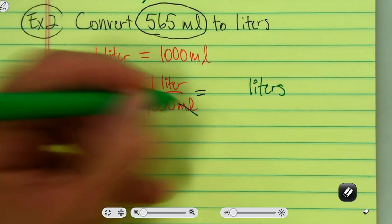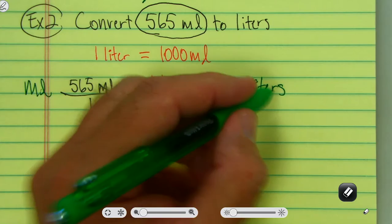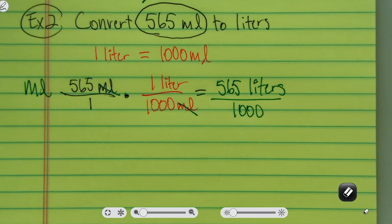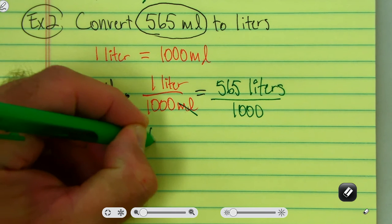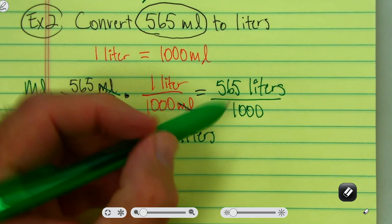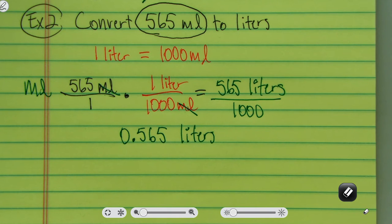The milliliters cancel. 565 times one liter is 565 liters over 1,000. My milliliters are canceled so they disappear. Using a calculator, I take 565 and divide it by 1,000, and I get 0.565 liters. That's another way to use dimensional analysis to convert two different measurements.